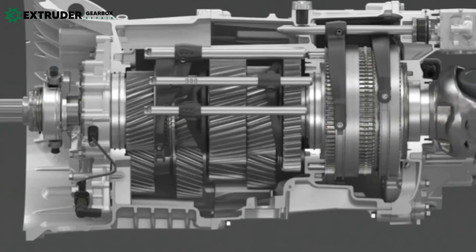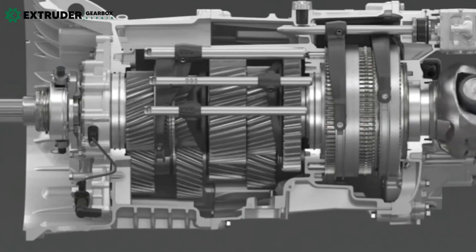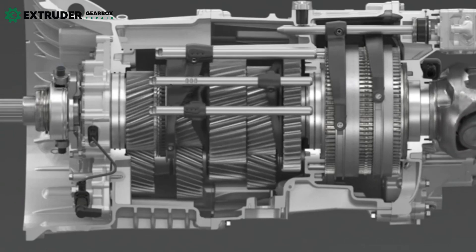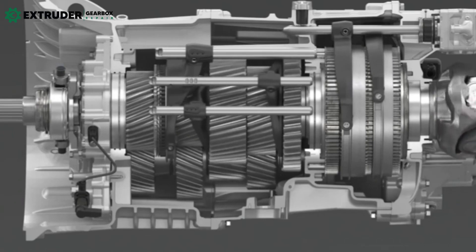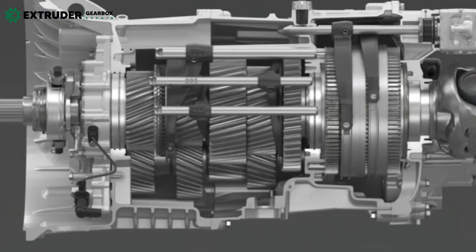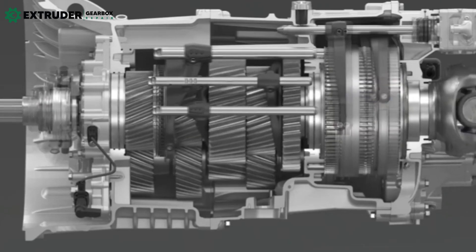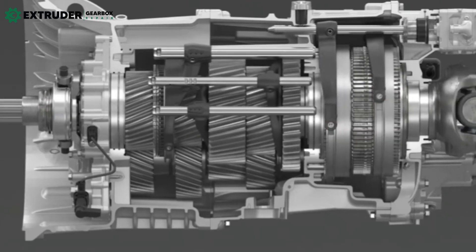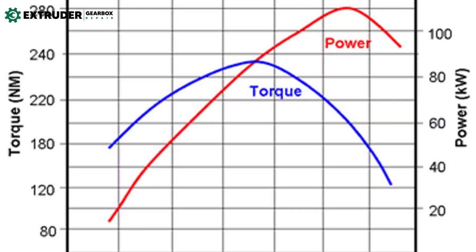Torque is the rotational force required to move an object. To determine the required torque for your system, you must consider factors such as the size and weight of your components, operating conditions, and desired speed and acceleration. A thorough analysis of your system will help you choose a gearbox with the appropriate torque for your application.